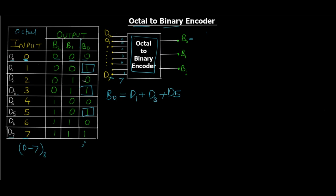This is for B0. Let's see for B1 now. For B1, you can see the output is 1 at D2, D3, D6, and D7. So just write it down: D2 plus D3 plus D6 plus D7. And lastly we have B2. For B2, you can see the last four inputs are high: D4 plus D5 plus D6 plus D7.